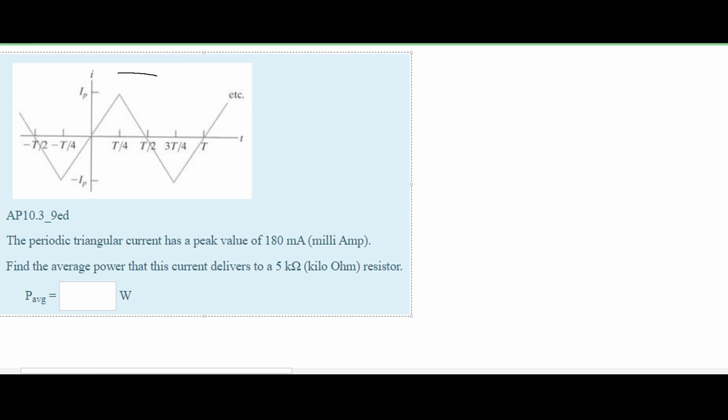In this problem we are given the following diagram. It is a periodic triangular current and it has a peak of 180 milliamps. At this very top it's 180, so we can assume at the very bottom it's negative 180 milliamps.